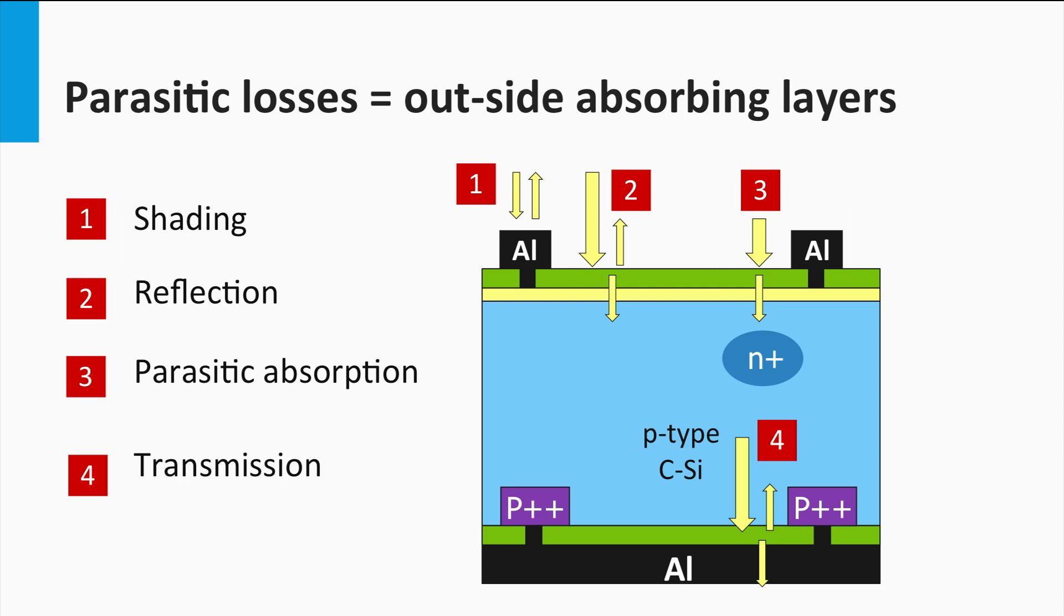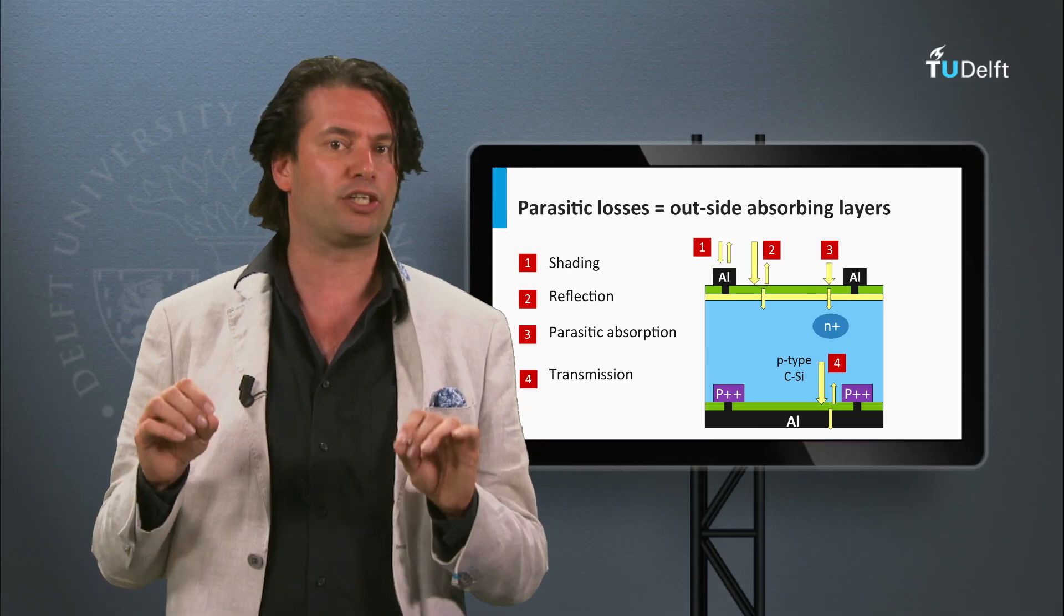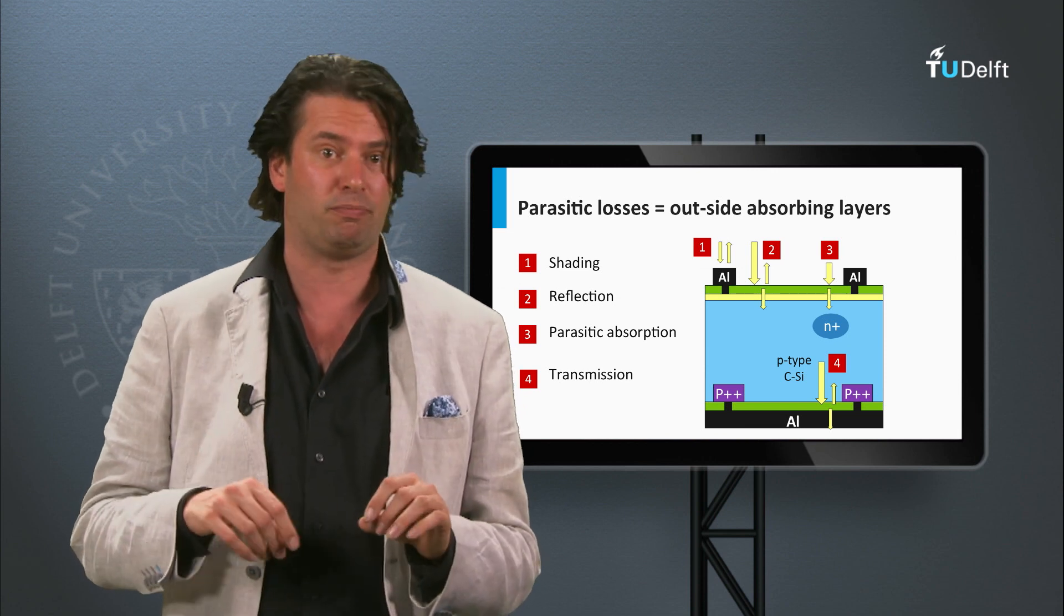Finally, if the absorber layer is not thick enough to absorb all light, part of the light will be transmitted. This loss mechanism starts to play a role for solar cells based on thin films.